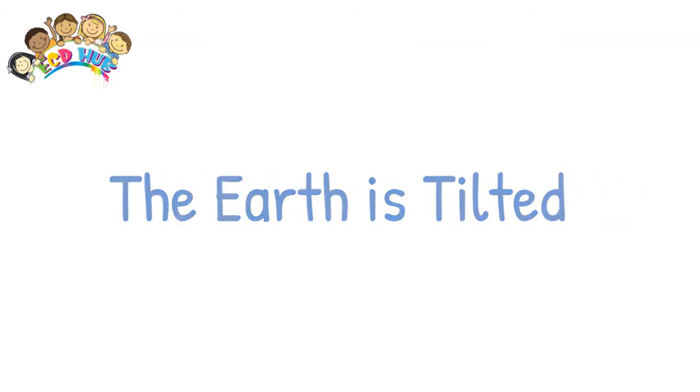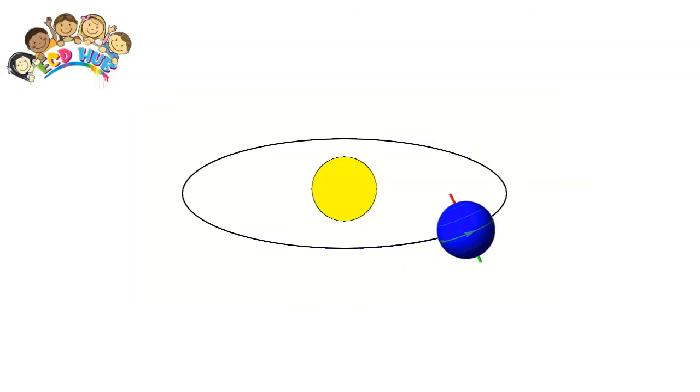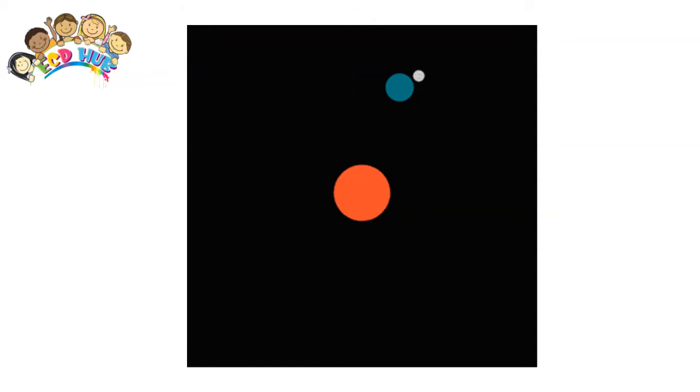The Earth is tilted. Not only does the Earth revolve around the Sun every year, but the Earth rotates on its axis every 24 hours. This is what we call a day.